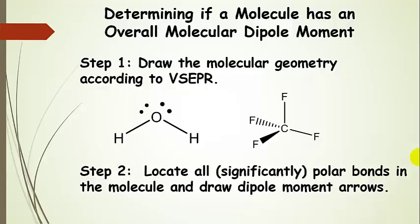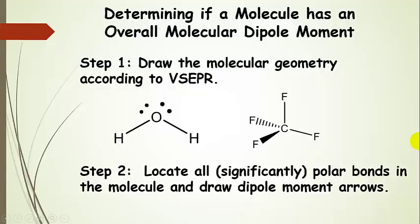Drawing the molecule using VSEPR is our first step — we'll use this information heavily when we talk about intermolecular forces. Water ends up with a bent shape, and carbon tetrafluoride ends up with a tetrahedral shape. Now let's look at the polar bonds in each molecule. The oxygen-hydrogen bond is a polar bond, and water has two of them. Carbon is bonded to fluorine, and fluorine is much more electronegative than carbon.